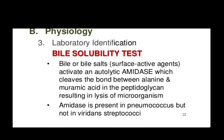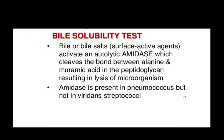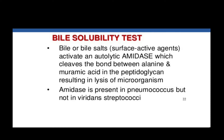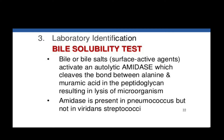Bile or bile salt acts as a surface active agent. It activates an autolytic amidase which cleaves the bond between alanine and muramic acid in the peptidoglycan, resulting in lysis of the microorganism. This amidase is present in Streptococcus pneumococcus but not in viridans streptococci. The enzyme is activated by bile salt or bile.